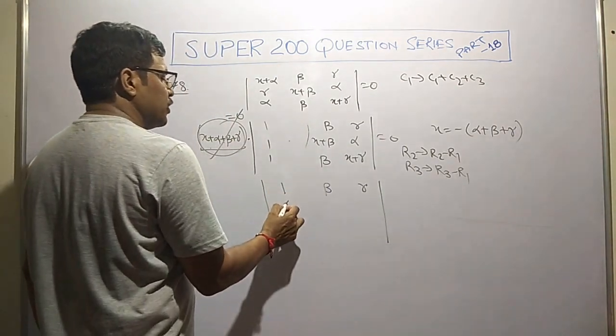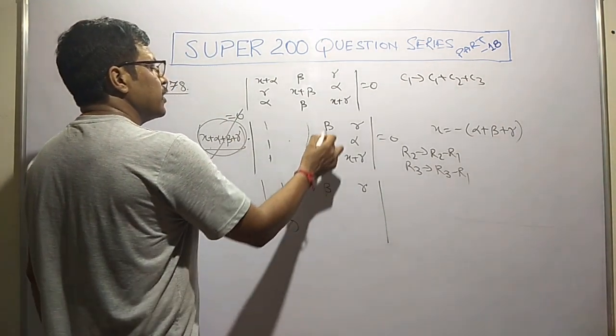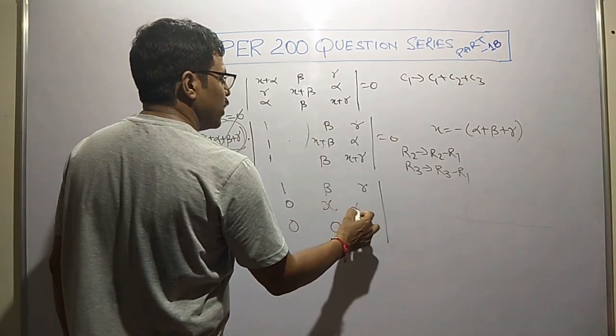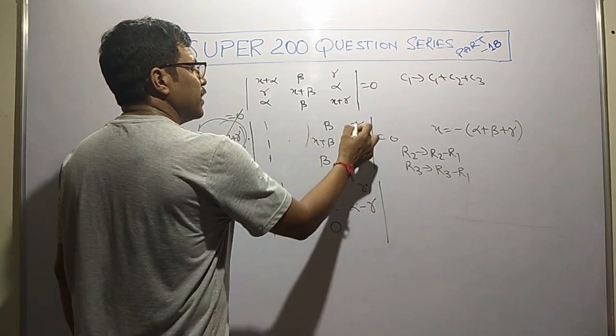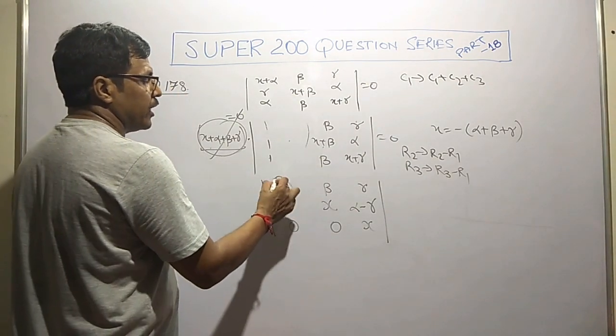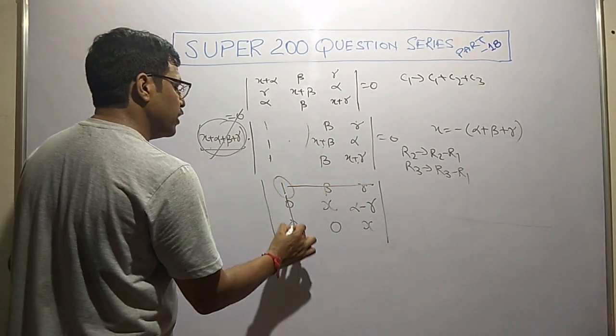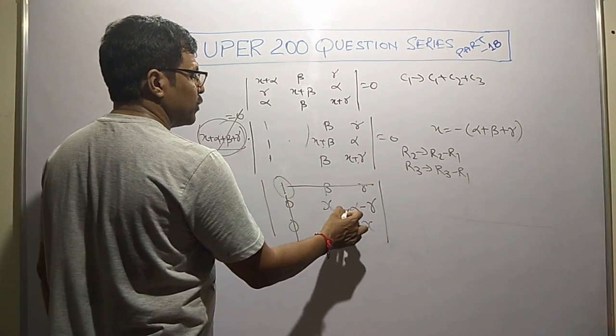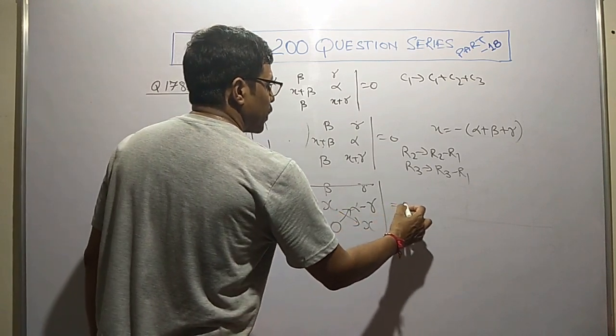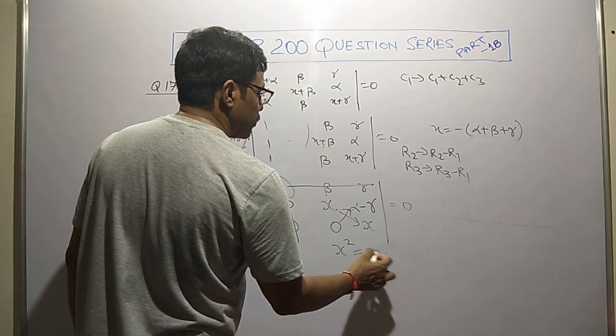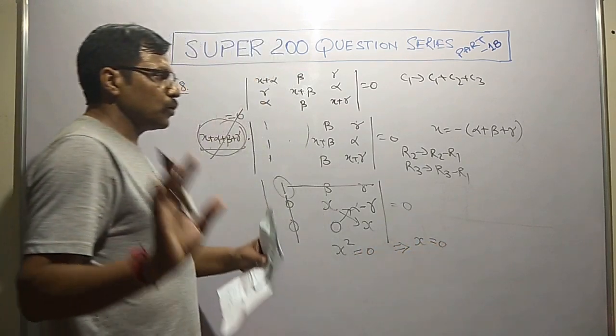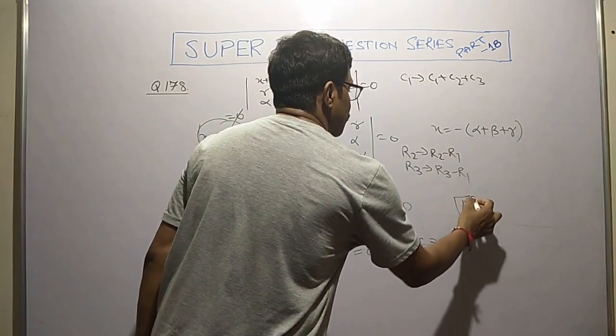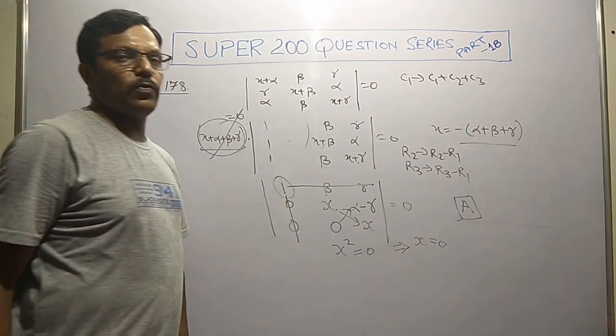Working on the determinant, applying r2 tends to r2 minus r1, r3 tends to r3 minus r1. Expanding against element a11, the value becomes x square equals 0, which implies x equals 0. So two solutions: either 0 or negative of alpha plus beta plus gamma, shown in option A.